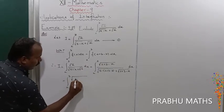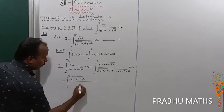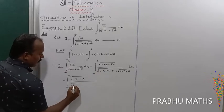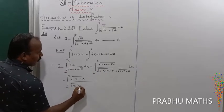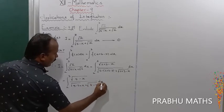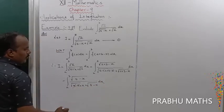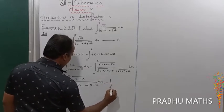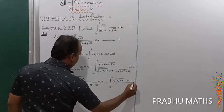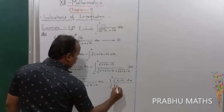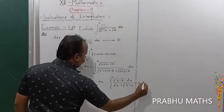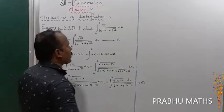That simplifies to integral from 2 to 3 of root of (5 minus x) divided by root of (5 minus (5 minus x)) plus root of (5 minus x), into dx. The 5 minus terms cancel, giving integral from 2 to 3 of root(5 minus x) divided by root x plus root(5 minus x), into dx. This is equation number 2.